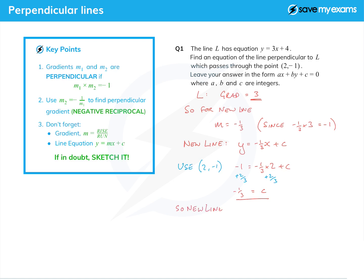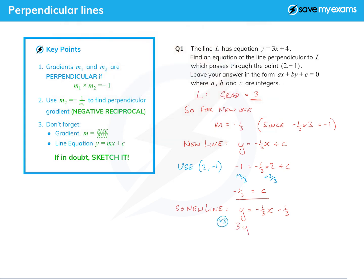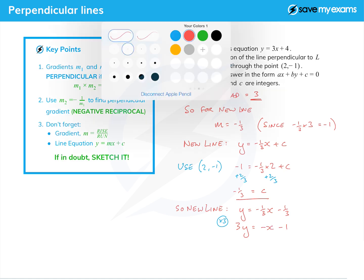We can now complete the equation of the new line in y equals mx plus c form: y equals minus a third x minus a third. But we're not asked to leave it like that. We need to put it in this form here, ax plus by plus c where a, b and c are integers or whole numbers. So we need to get rid of the fractions and we're going to do that by multiplying everything by 3, which gives us 3y equals minus x minus 1.